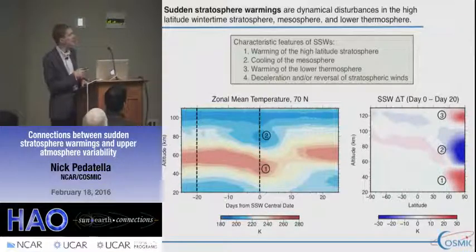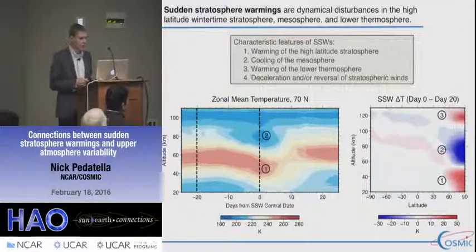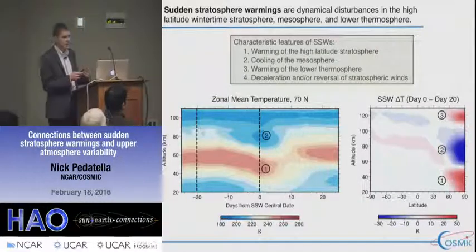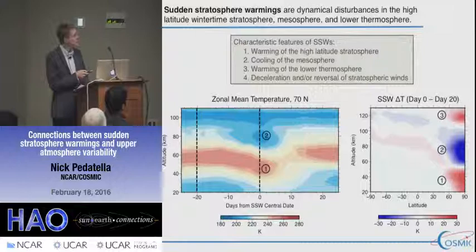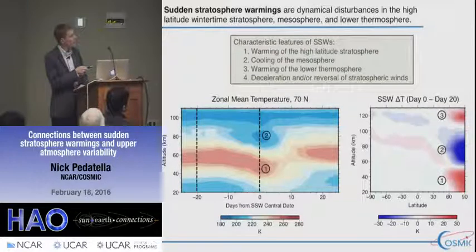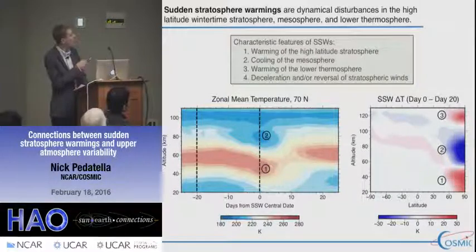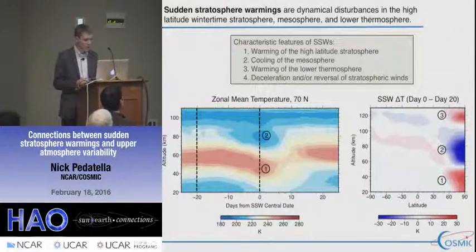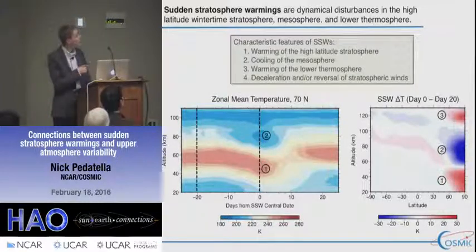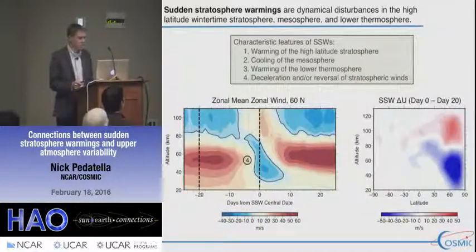The main characteristics in the lower atmosphere are a warming of the stratosphere — intuitive from the name — with a large temperature increase seen in the stratosphere, then a cooling above in the mesosphere, and then a slight warming again in the lower thermosphere. These processes occur over roughly five to ten days. Along with these temperature changes, you also get a change in the zonal mean zonal winds in the high-latitude stratosphere and mesosphere.